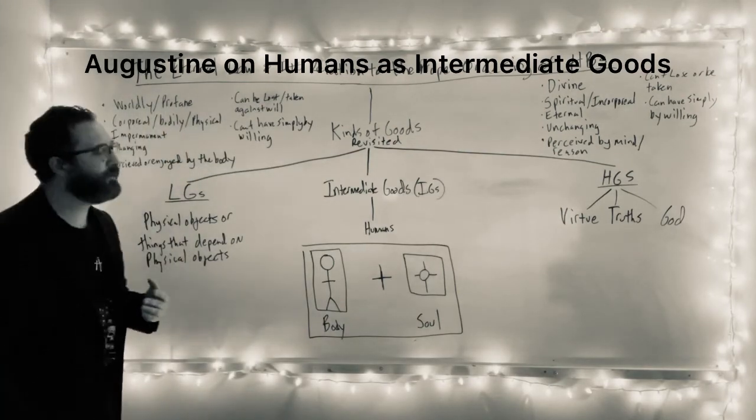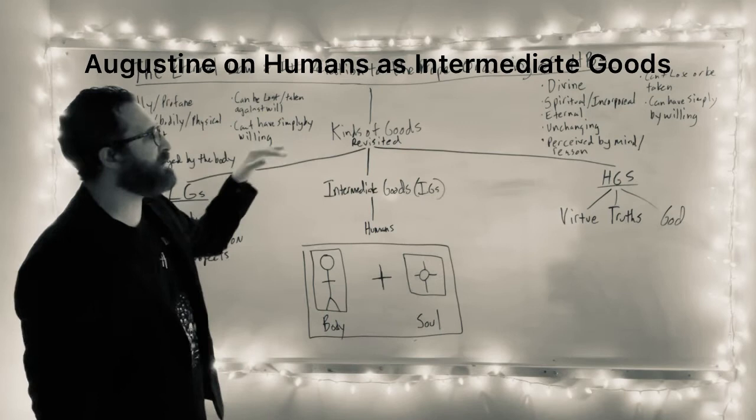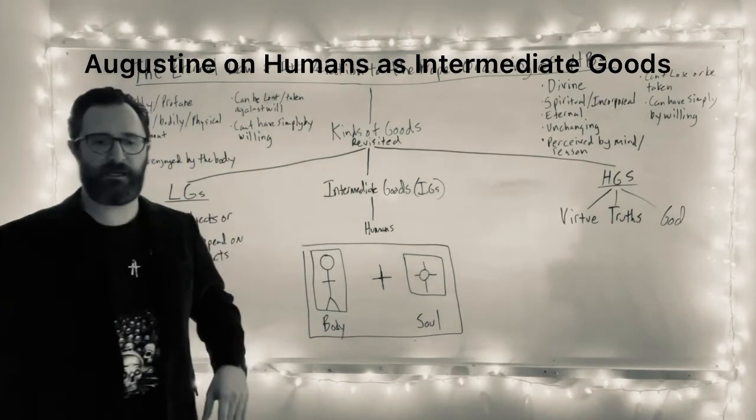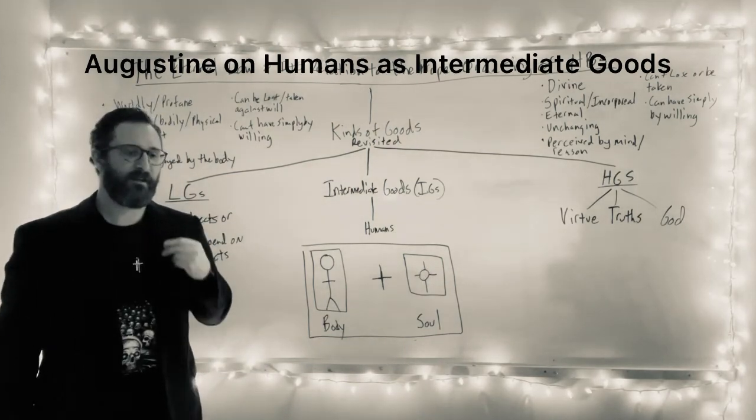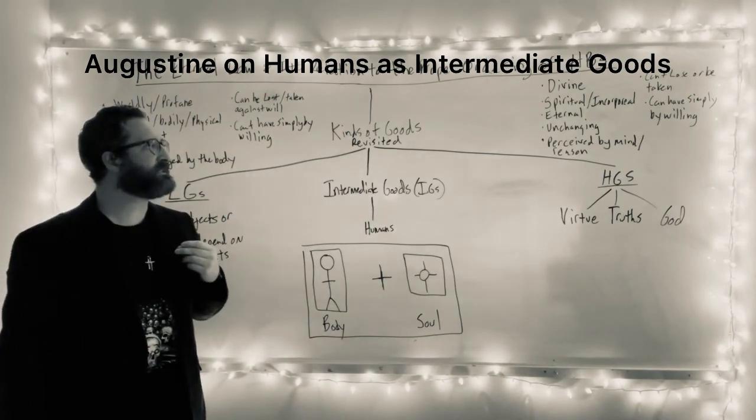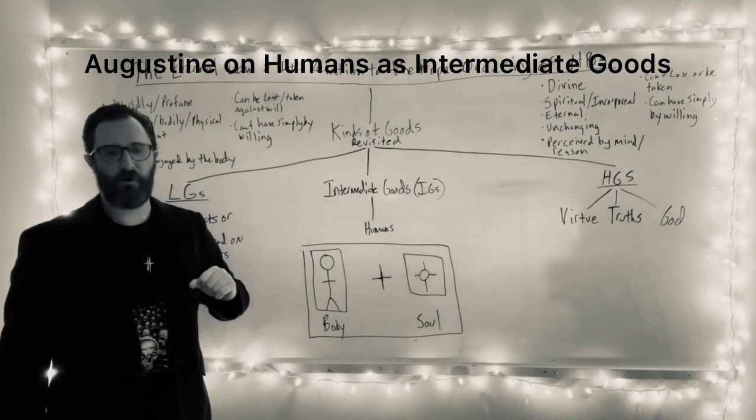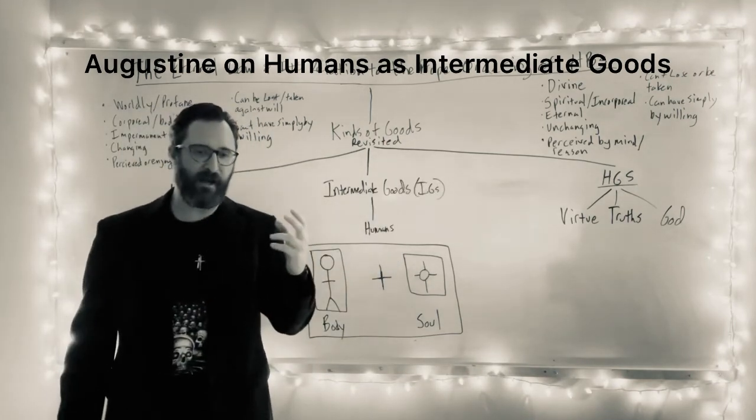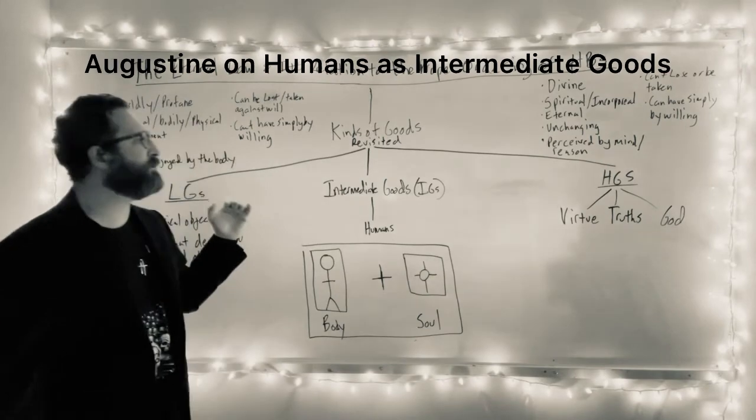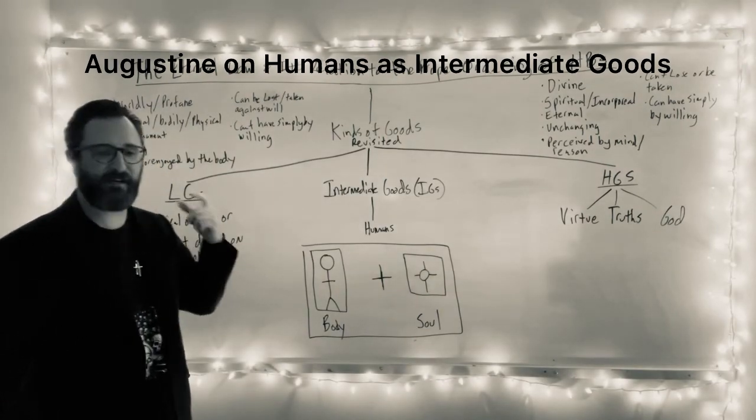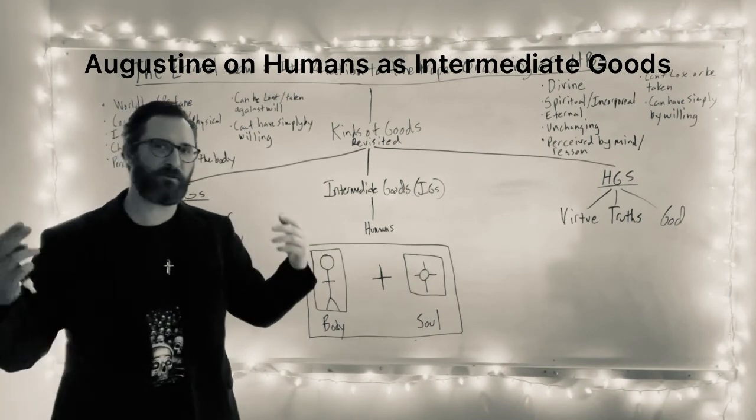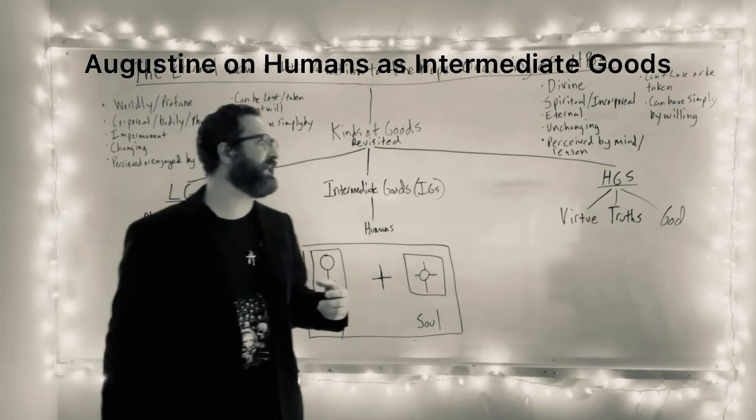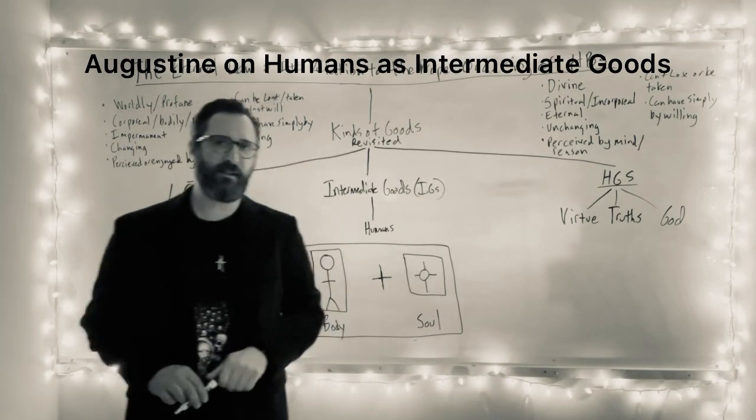So in this video, we talked about Augustine's taxonomy of goods, and we added to that his category of intermediate goods in which he places human beings. In the next upcoming videos, what we're going to discuss is Augustine's taxonomy of the senses. So he takes there to be bodily senses, but he also takes there to be a sense of the mind, namely an eye of the mind, right? And we're going to look at his arguments that there is what he sometimes calls or is referred to as intellectual perception, a kind of seen by the mind or an eye of the mind. And eventually we're going to look at his argument for God from truth. I'll see you in the next video.